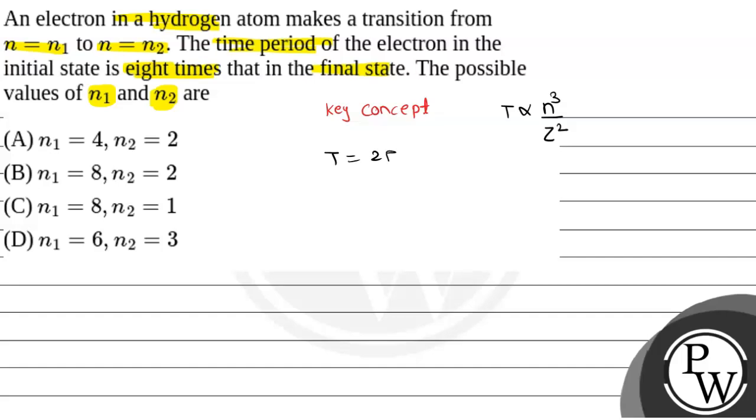T is equal to 2 pi r upon V. Time period is 2 pi r upon V, and you know that R is directly proportional to n squared. Secondly, V is inversely proportional to n.